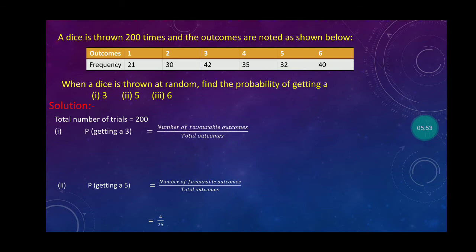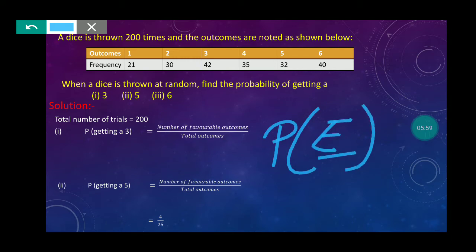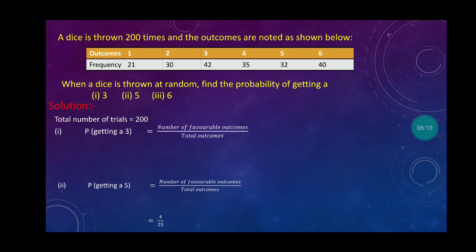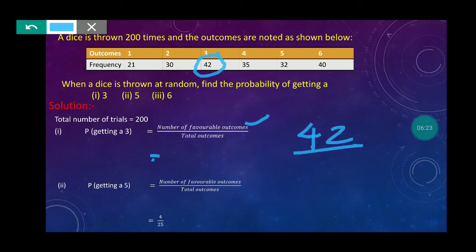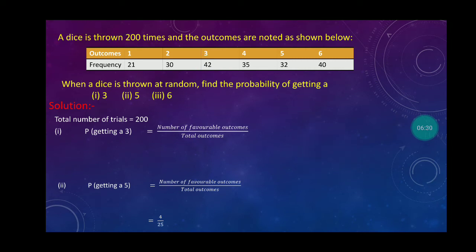First point: total number of trials is 200. First point, P(getting a 3). As I explained earlier, P(E), E means event. What we need to find in first point is 3, so P(getting a 3). Using the formula, number of favorable outcomes upon total outcomes. In the table, 3 came 42 times. So favorable outcomes is 42 upon total outcomes 200. Simplifying: 21 upon 100.